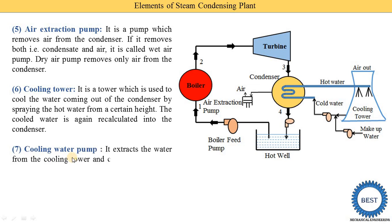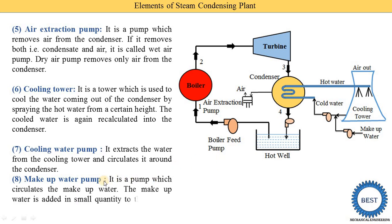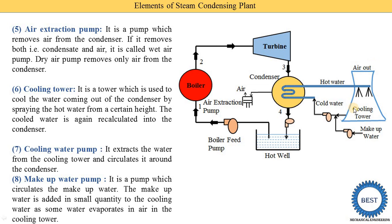The next component is the cooling water pump. It extracts the water from the cooling towers and circulates it around the condenser, transferring water from the cooling towers to the condenser. The last component is the makeup water pump. We need to add makeup water because during the cooling of water in the cooling tower, some quantity of water is evaporated. So we add fresh water, called makeup water, using the makeup water pump.